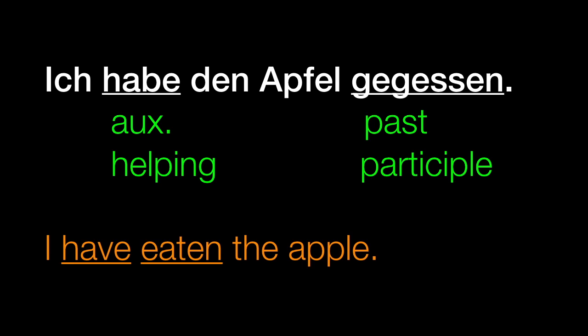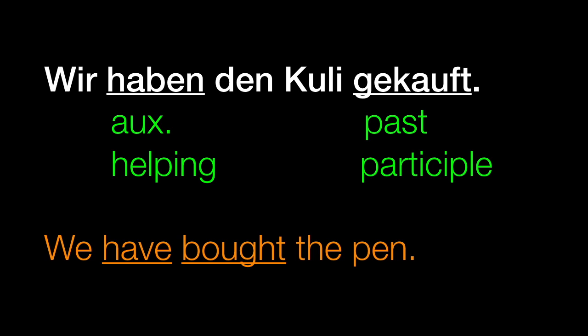We can look at the perfect form in English and German — they're similar in that they both have an auxiliary helping verb and a past participle. The difference is that German puts the past participle at the end of the sentence, while English puts it up front. So we have a word order issue here. I have eaten the apple — in German: ich habe den Apfel gegessen, meaning 'I have the apple eaten.' Wir haben den Kuli gekauft — we have the pen bought. Your auxiliary helping verb is up front; your past participle is at the end.